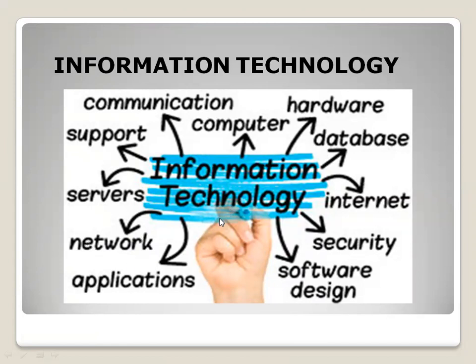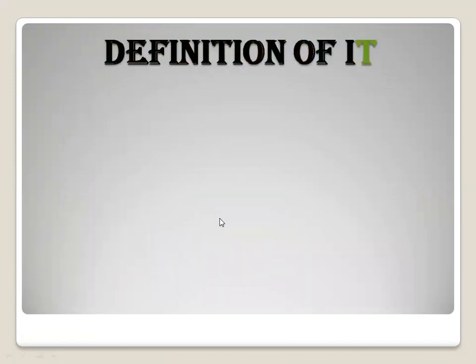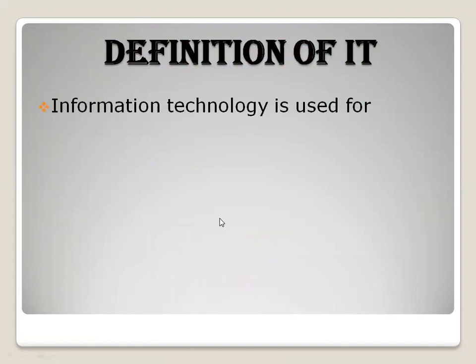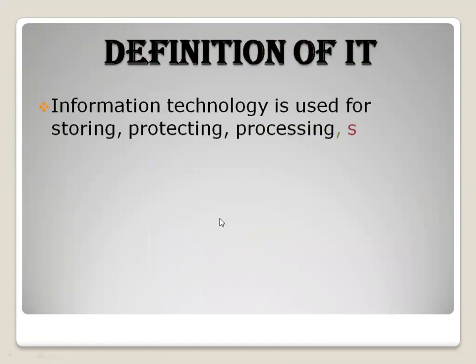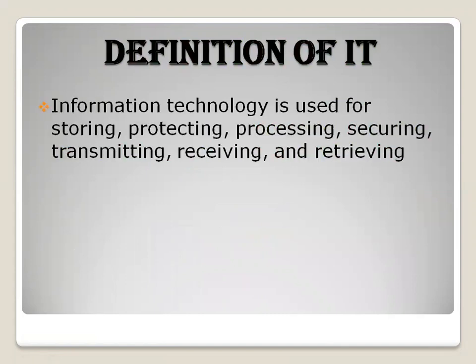Now we will know the definition of information technology. Information technology is used for storing, protecting, processing, securing, transmitting, receiving, and retrieving information. This means information technology not only stores your data, it also protects your data.